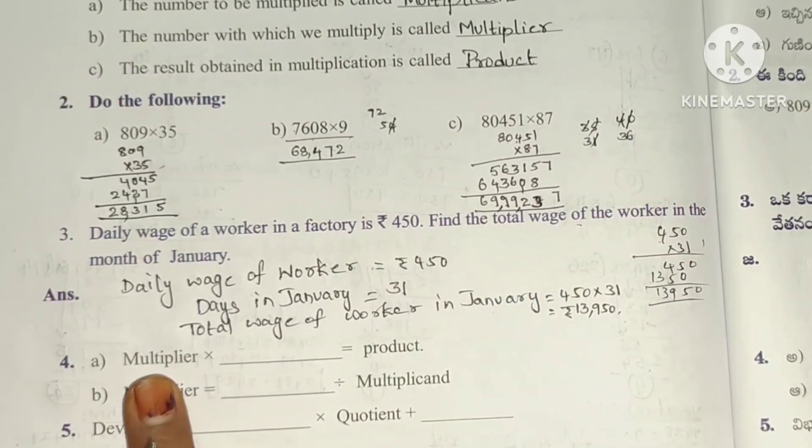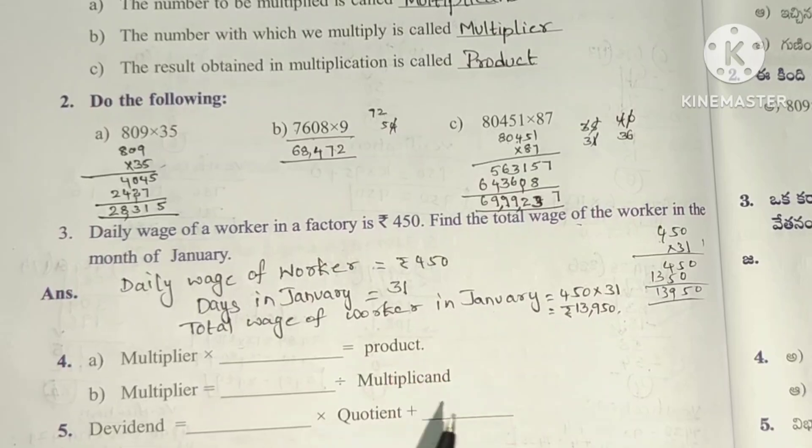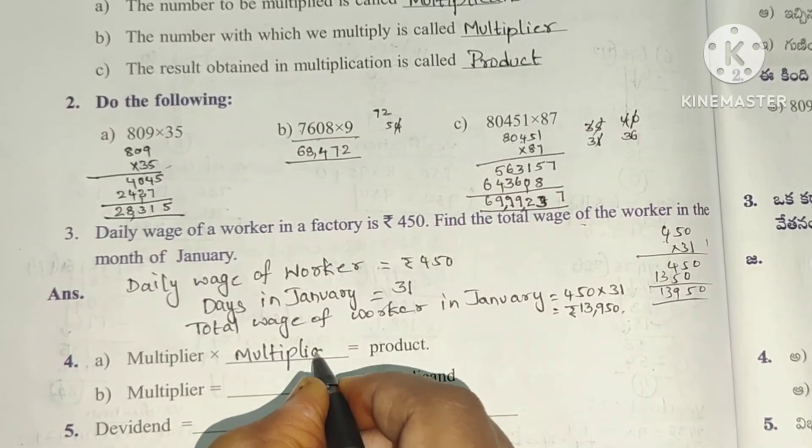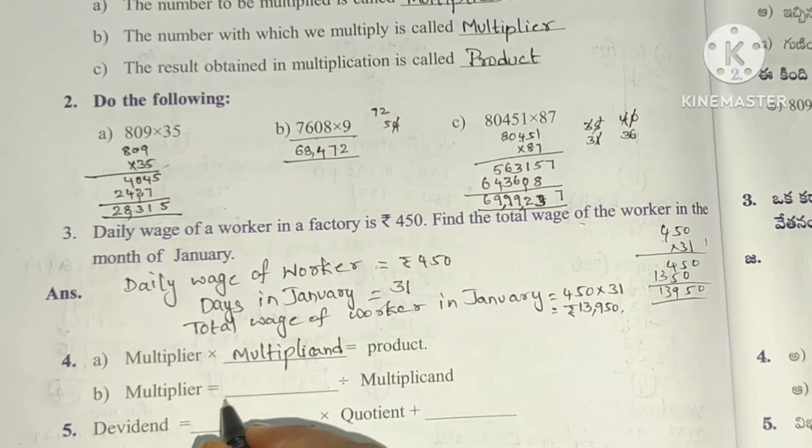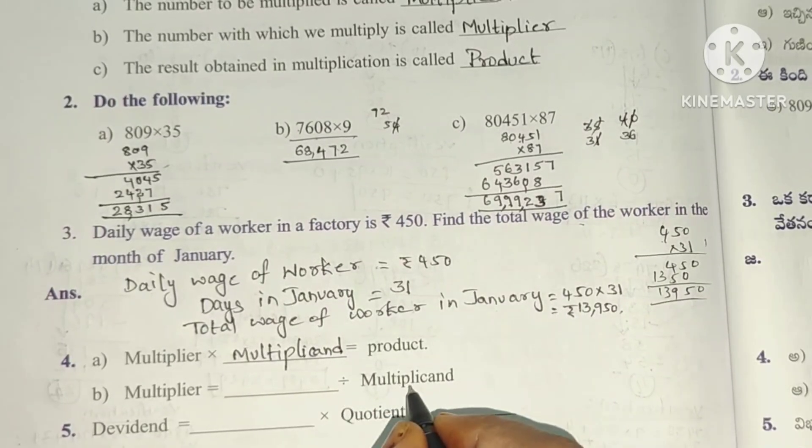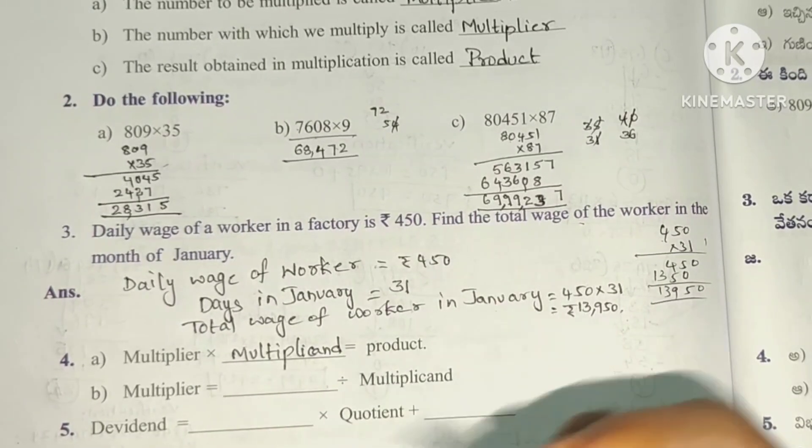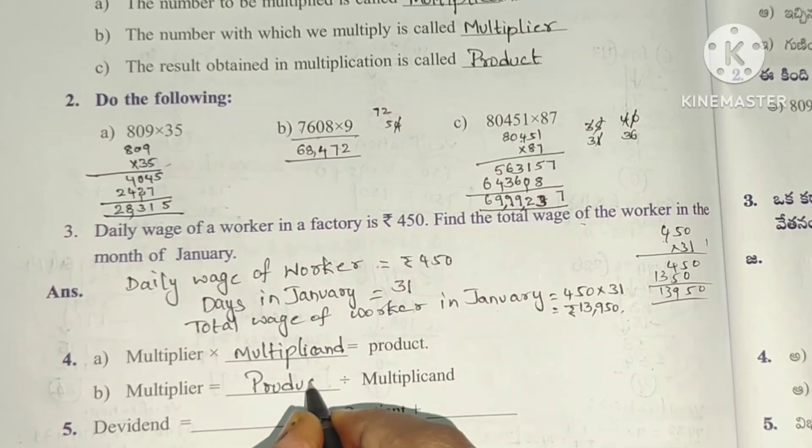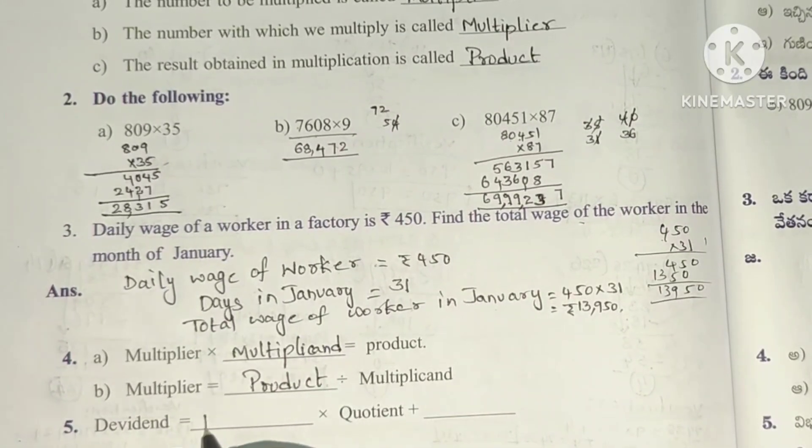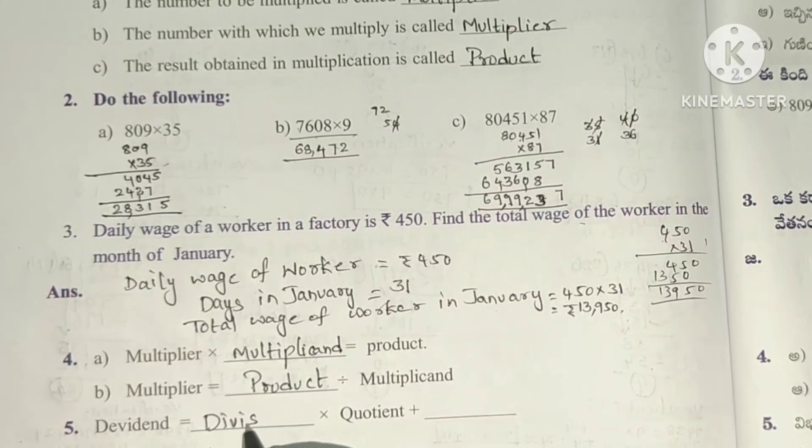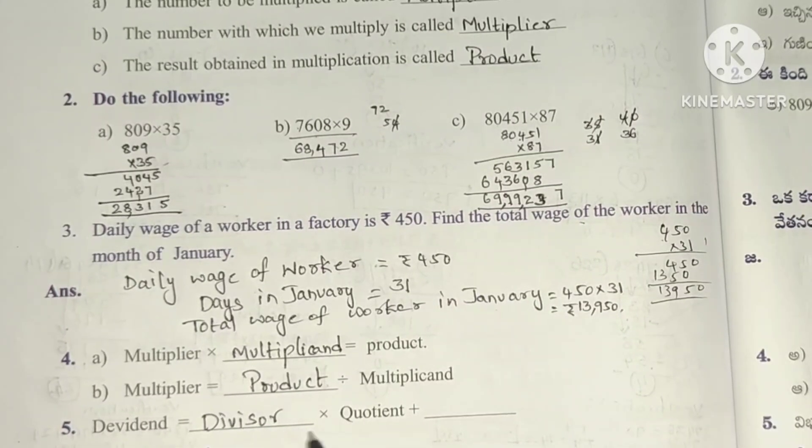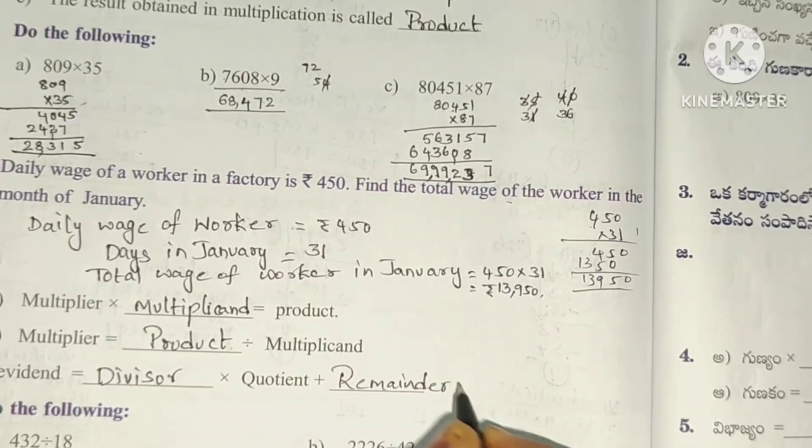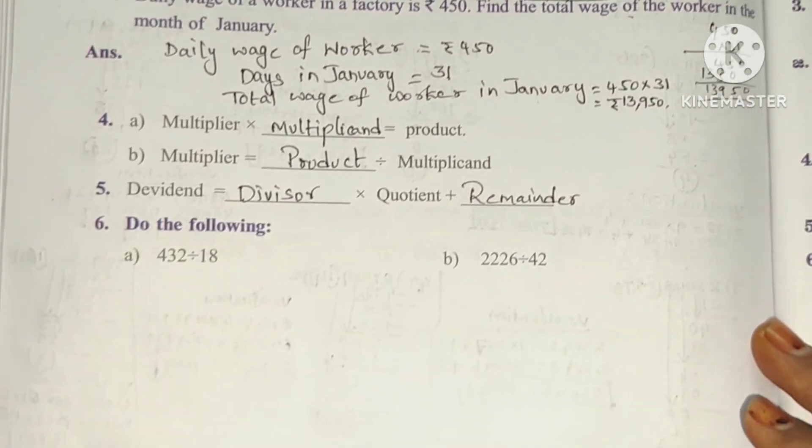Next, fourth problem. Multiplier into dash equals product. Multiplier into multiplicand equals product. Multiplier equals product divided by multiplicand. Dividend equals divisor into quotient plus remainder. This is the division rule.